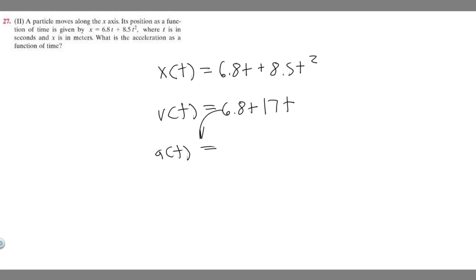We need to take the derivative of it to get acceleration. The derivative of 6.8 is just going to be zero, because the derivative of a constant is zero. And then the derivative of 17t is just 17. So a(t) is equal to 17.